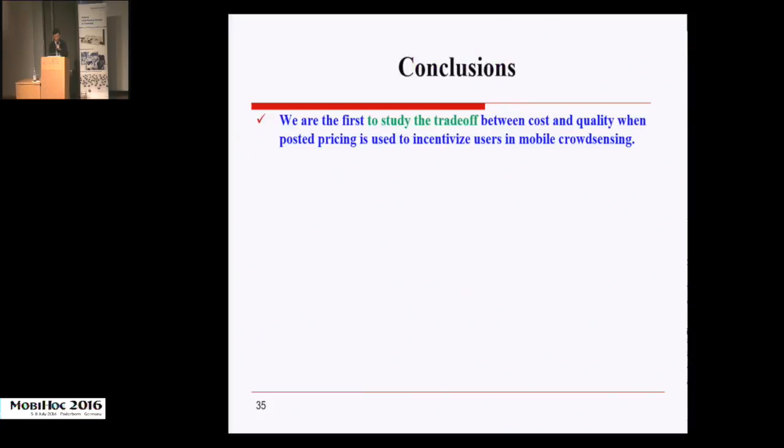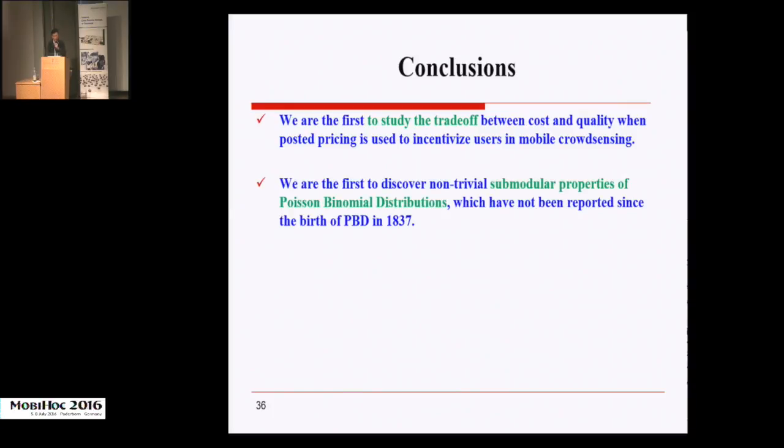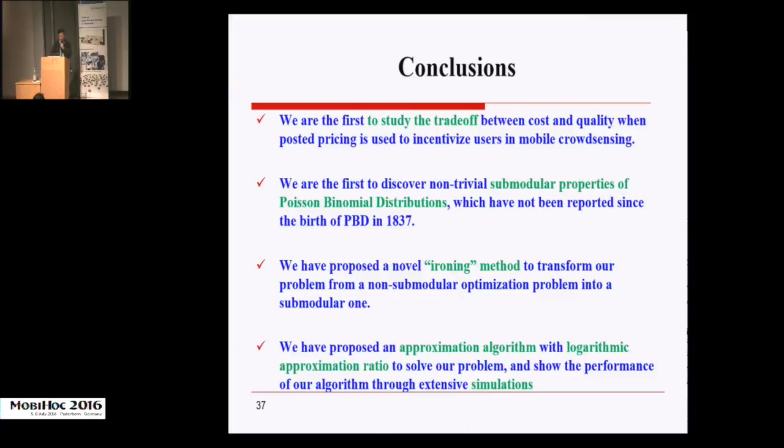Now let's conclude the paper. There are several major contributions. Firstly, the authors are the first to study cost and quality when posted pricing is used to incentivize users in mobile crowdsensing. Secondly, the authors are the first to discover non-trivial submodular properties of Poisson Binomial Distributions. We believe that this discovery can be used in many other scenarios. Thirdly, the authors propose a novel ironing method to transform the problem from non-submodular to submodular, and they propose an approximation algorithm. And finally, they give performance evaluation by extensive simulations.